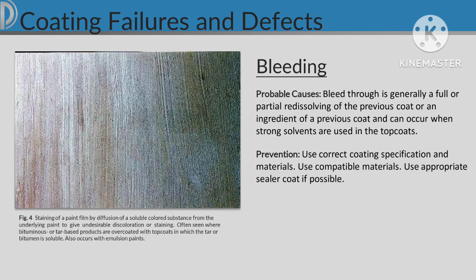Bleeding. Probable causes: partial bleed through is generally a dissolving of the previous coat or an ingredient of a previous coat, and can occur when strong solvents are used in the top coats. Prevention: Use correct coating specification and materials, use compatible materials, and use an appropriate sealer coat if possible.